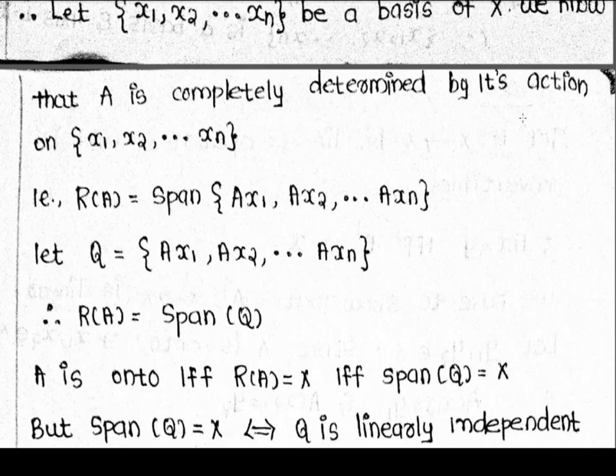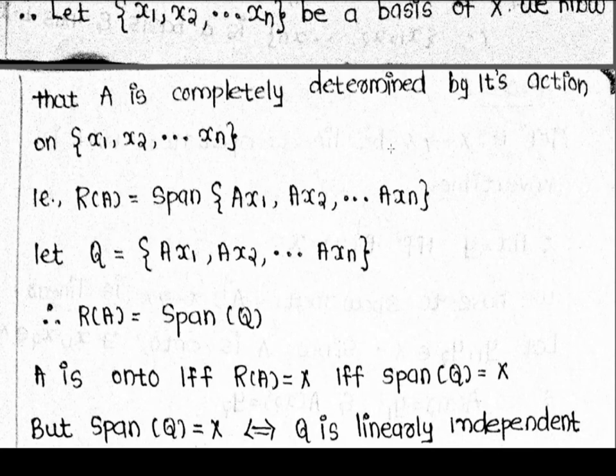Since a linear operator is completely determined by its action on any basis, let {x1, x2, ..., xn} be a basis of X. The range of A is the span of {A(x1), A(x2), ..., A(xn)}. So A is onto if and only if the span of that set equals X.